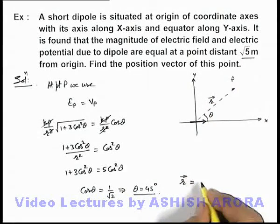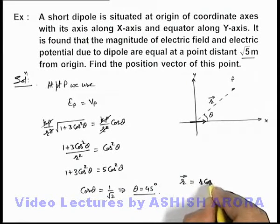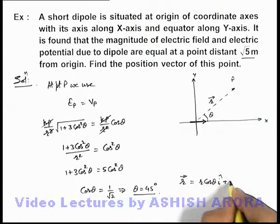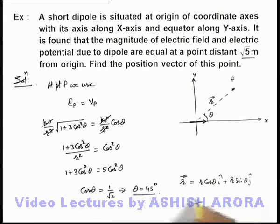So it'll be r cosθ î + r sinθ ĵ. If we substitute the values of r and θ, it'll be (√5/√2)î + (√5/√2)ĵ, or (√5/√2)(î + ĵ). That'll be the answer to this problem.